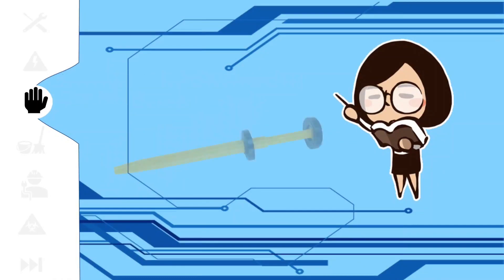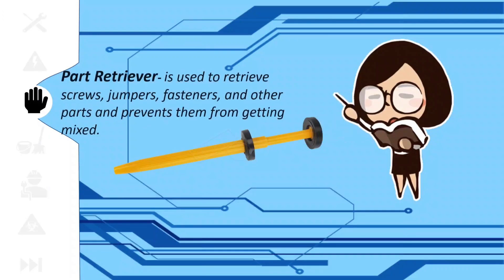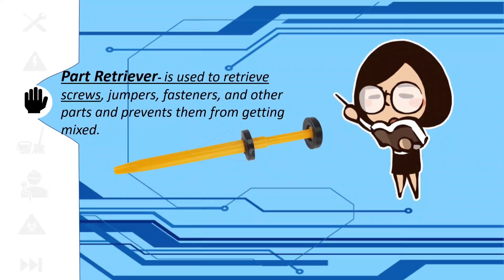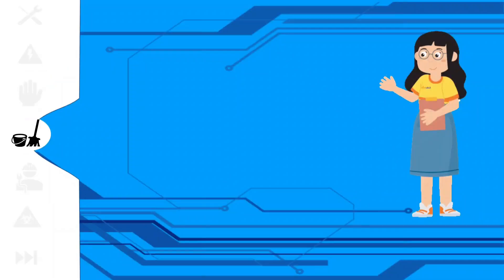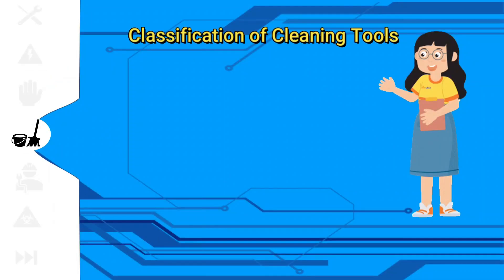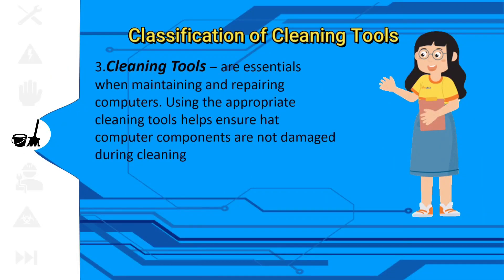Part retriever is used to retrieve screws, jumpers, fasteners, and other parts, and prevents them from getting mixed. Next up, the different classifications of cleaning tools.